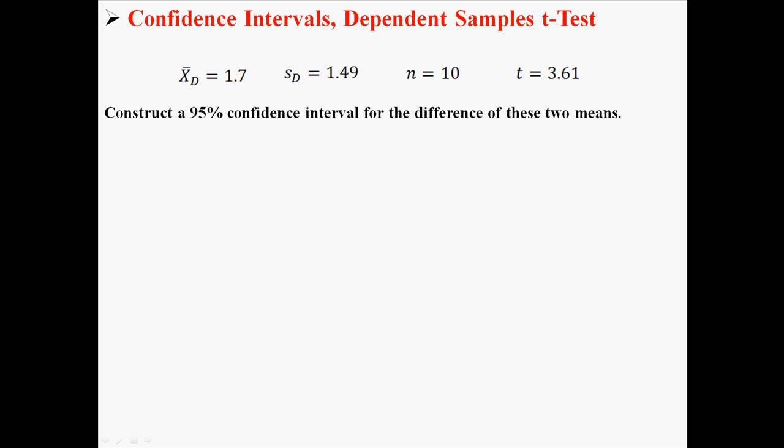Here's my question using the data from the example I had in my last lecture. We had a mean difference of 1.7, a difference standard deviation of 1.49, a sample size of 10, and our t was 3.61. Using this information that you would already have after doing any dependent samples t-test, construct a 95% confidence interval for the difference of these two means.